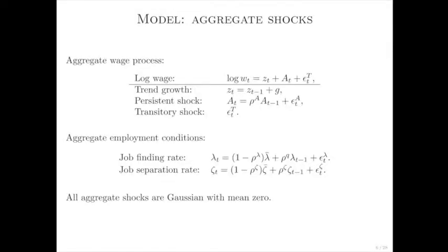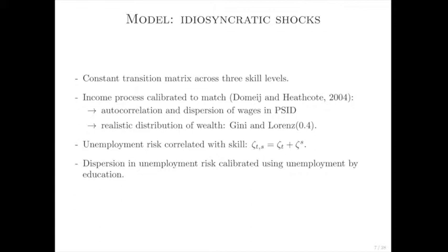In the model there are four aggregate shocks. The log wage is driven by a trend growth rate, an aggregate persistent technology shock, and a transitory shock. When I take this to the data, I'll think about after-tax and transfer labor income in the aggregate, so the transitory shock can potentially stand in for short-lived changes in taxes or transfers. The labor market is driven by a job-finding rate and a job-separation rate — the probabilities of moving into and out of unemployment — modeled as AR(1) processes with mean rates. All shock processes are assumed normally distributed. For idiosyncratic shocks, there are two: the employment state and the skill state. I choose a highly dispersed set of skills, matched to the autocorrelation and dispersion of wages and to features of the wealth distribution. Households are more likely to become unemployed if they're in the low-skill group, consistent with unemployment patterns by education.